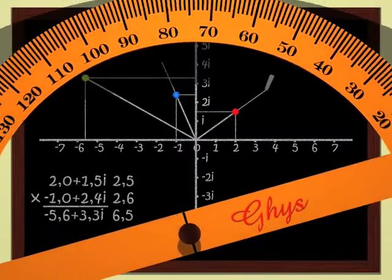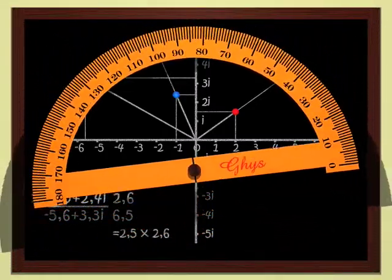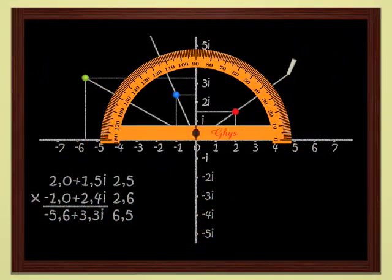The argument of a complex number is measured by the angle between the abscissa axis and the straight line joining the origin to the point. Here, for instance, the argument of the red complex number is 36.8 degrees. The argument of the blue point is 112.6 degrees.